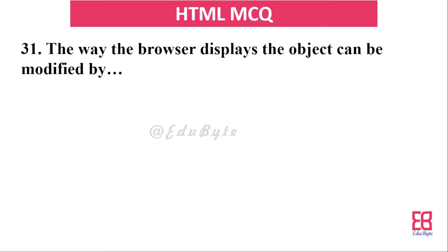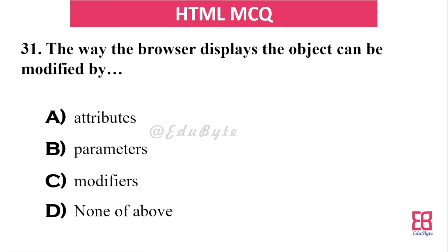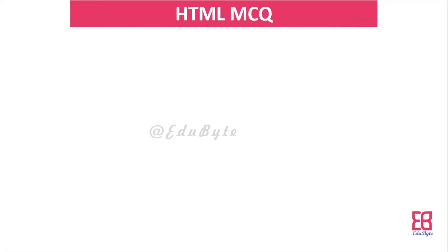Question twenty-seven: the way a browser displays an object can be modified by using what? The options include parameters, modifiers, and none of the above. The correct answer is attributes — attributes act as modifiers for HTML elements.